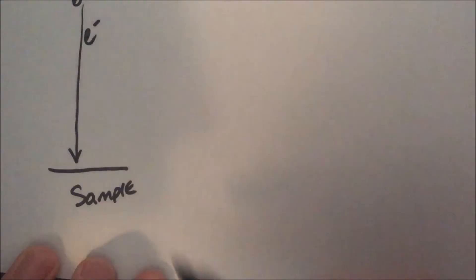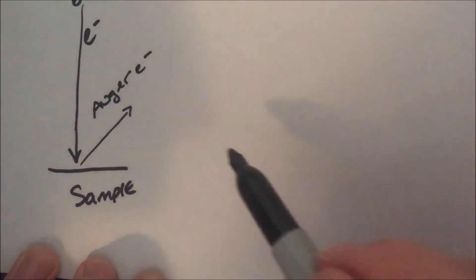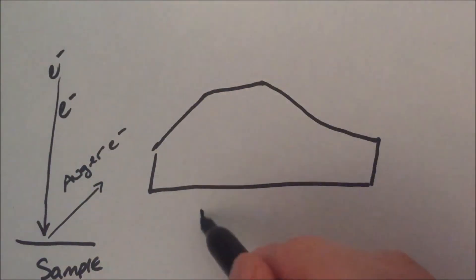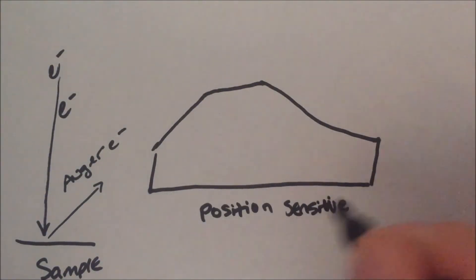Auger electron detectors have various geometries, but a common technique is through use of a hyperbolic field analyzer. This detector draws Auger electrons to it using a positive bias.